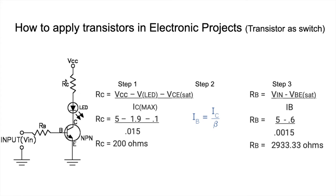Now Step 3 is finding RB. We've already calculated RC and IB. For RB, instead of VCC we give a control voltage VIN. If this voltage is present, the transistor is on; if not, the transistor is off.